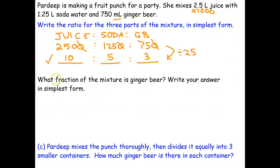Next question. What fraction of the mixture is ginger beer? So the first thing we have to do is work out the total. Again, we're going to work in milliliters. So I need to add 2,500 milliliters to 1,250 milliliters to 750 milliliters. Well this one's actually not too hard to do in my head. I can add those together first, and that gives me 2,000. And 2,000 plus 2,500 is 4,500 milliliters. So that's the amount of mixture that I have.